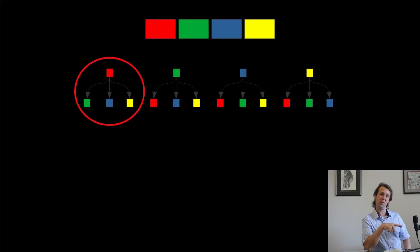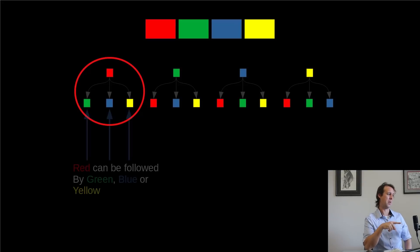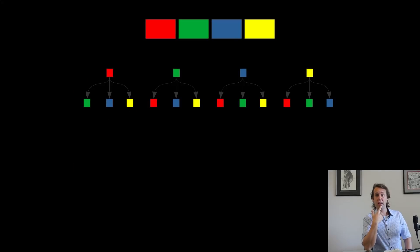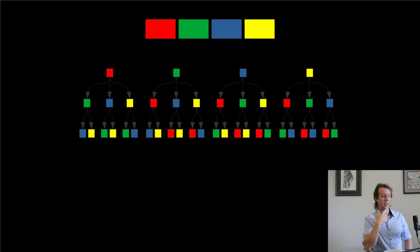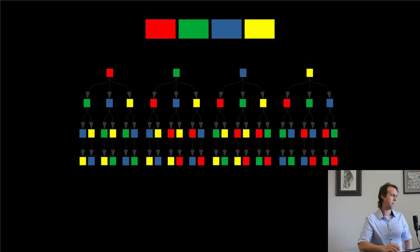Then the second element can be any one of the three remaining colours. Yeah, so if we pick red first, then the second element could be green, blue, or yellow. Likewise, the third element of the permutations is going to be any one of the two remaining colours. And then finally, on the end, we have to pick whatever's left. So if we were to draw the entire list of permutations out as a tree, it might look something like this. This tree just here actually represents all 24 permutations of the coloured boxes.